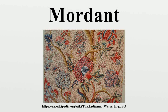For example, cochineal scarlet — or Dutch scarlet as it came to be known — used cochineal along with a tin mordant to create a brilliant orange-hued red. Residual iron mordant can damage or fade fabric, producing dye rot.